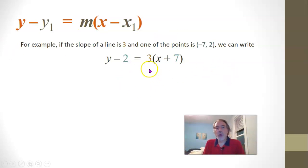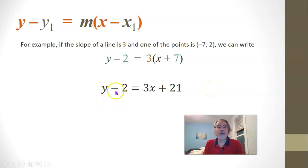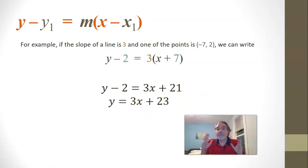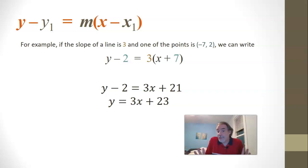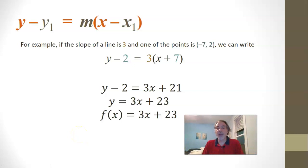Once we have that written down, we can distribute to get rid of the parentheses, multiply this out, and write y minus 2 equals 3x plus 21. If we want y by itself, we can add 2 to both sides: y equals 3x plus 23. And if we want it in function notation, f of x equals something — once you've got it solved for y, just write f of x equals 3x plus 23.